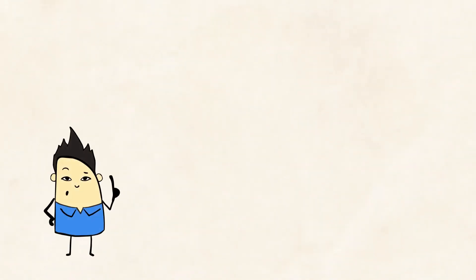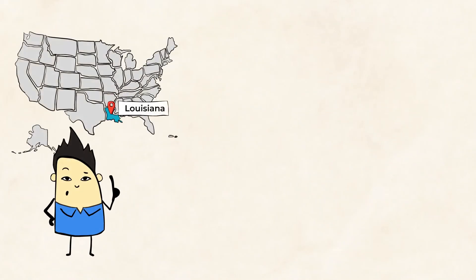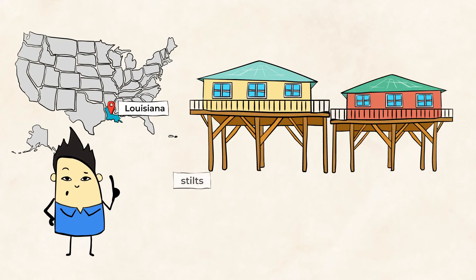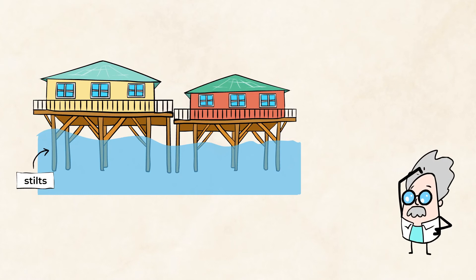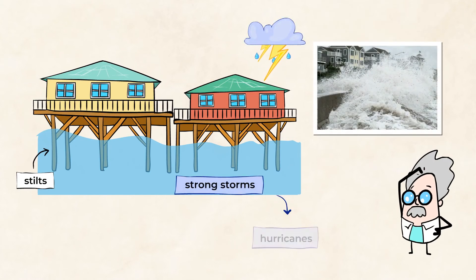In coastal areas, like some parts of Louisiana, most of the houses are built on stilts or on top of garages to prevent them from flooding. Look at how these high houses are up off the ground. That's because these areas experience high waves caused by really strong storms called hurricanes.